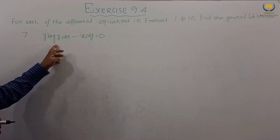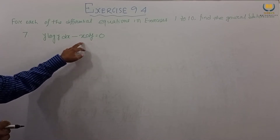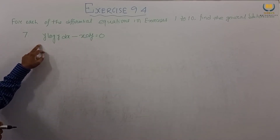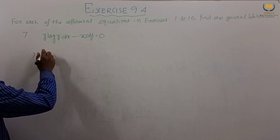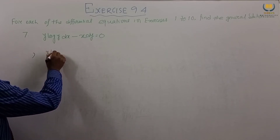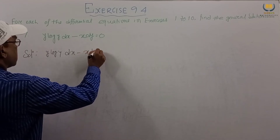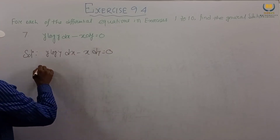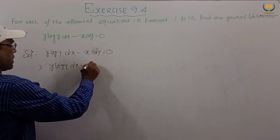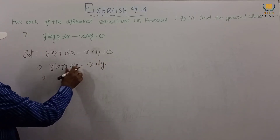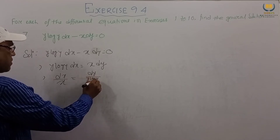Problem number 7: y·log(y)dx equals x·dy. Here dx is with y terms, and dy is with x, which are mixed. We separate the variables: divide to get dy/(y·log y) equals dx/x. Now dy is with y and dx is with x.